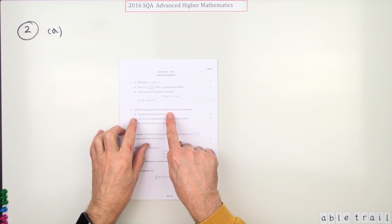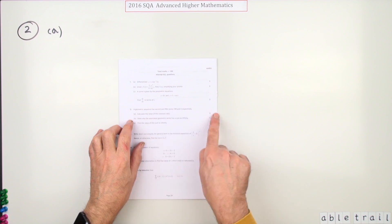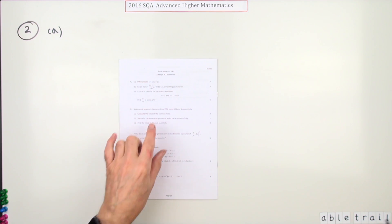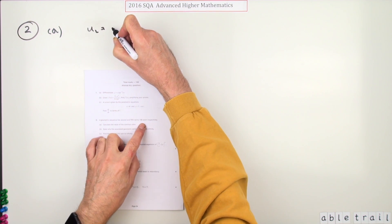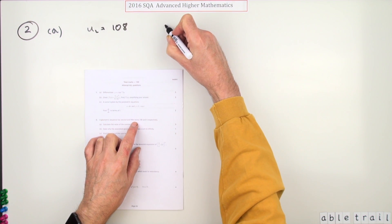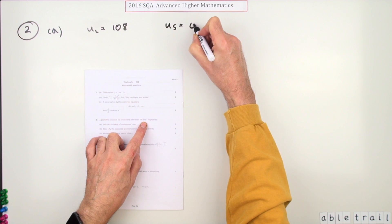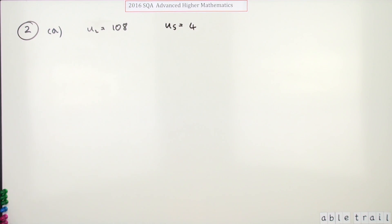It gives you a couple of terms and for part A for three marks it says what's the value of the common ratio? Well what are these terms? It says the second term, so I'll just call that U2 is 108, and the fifth term is going to be four.